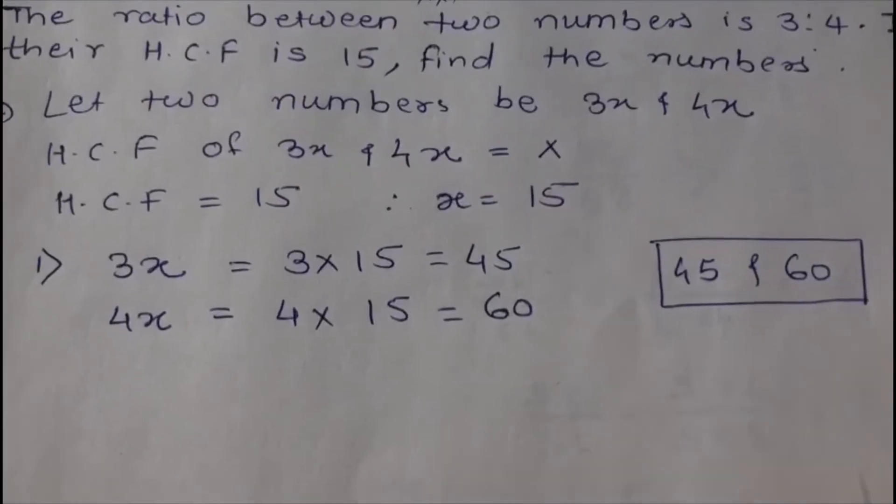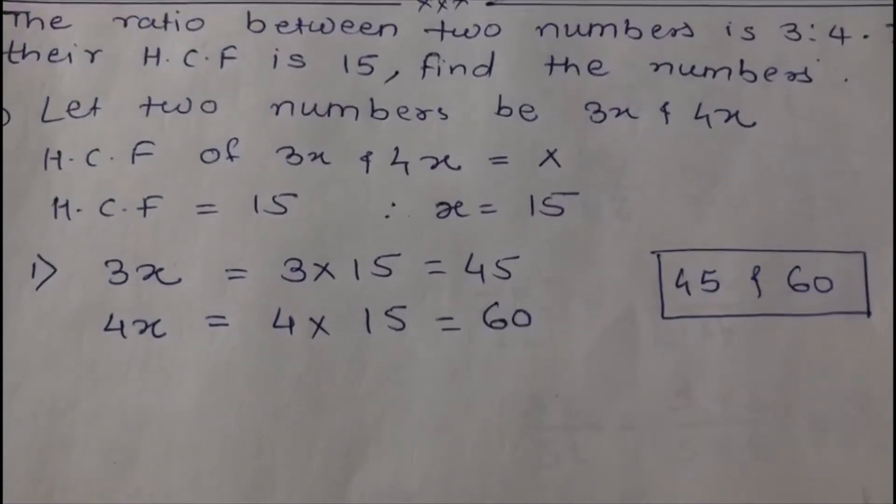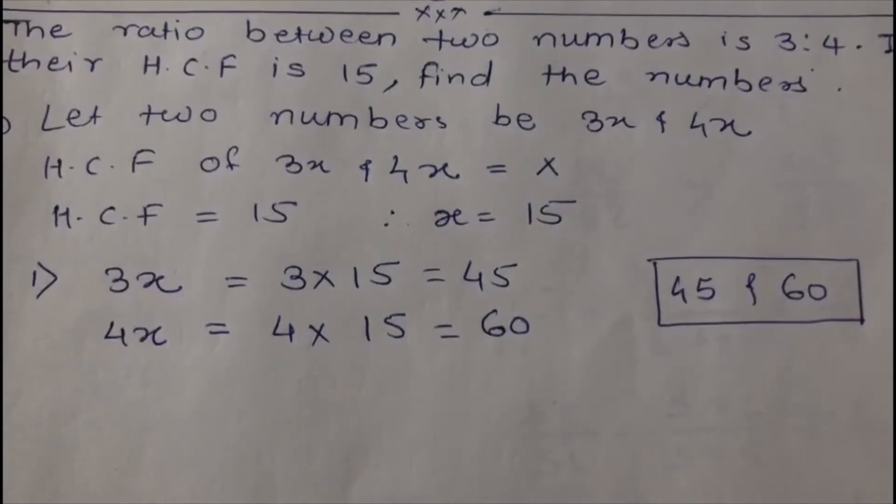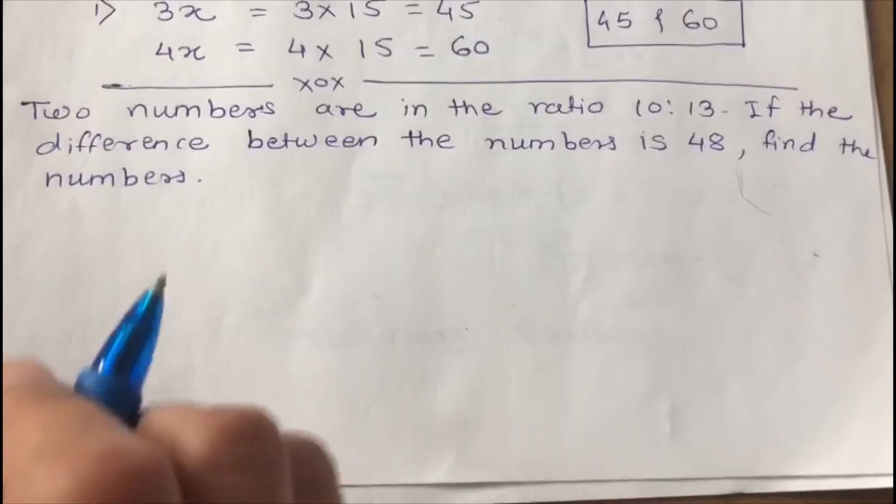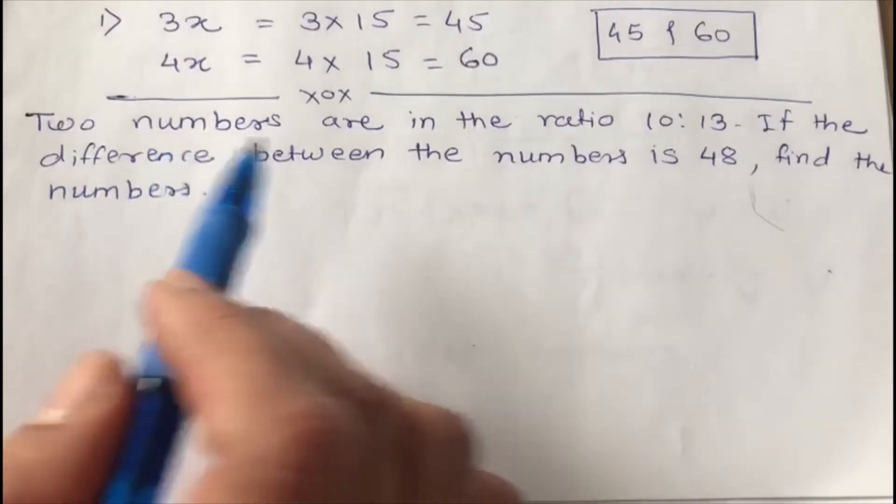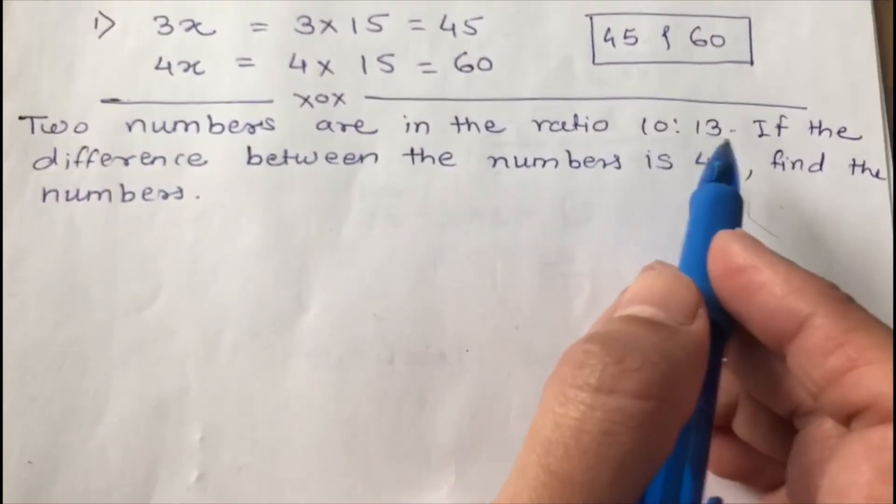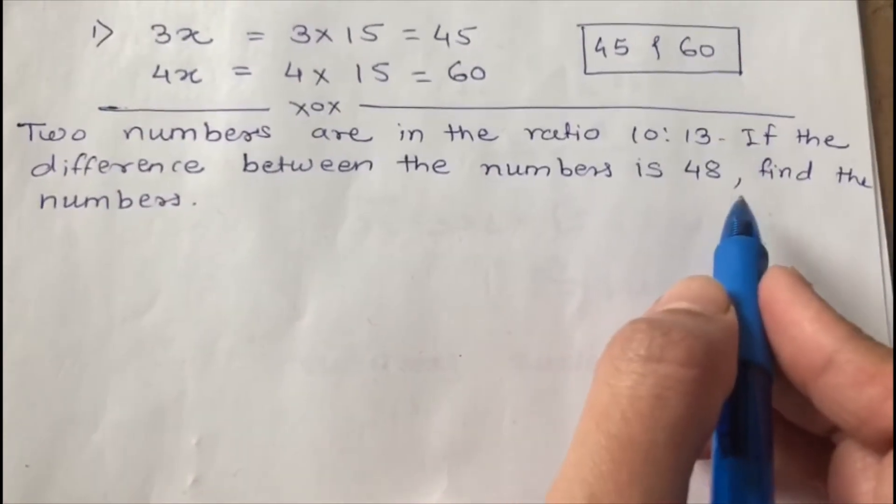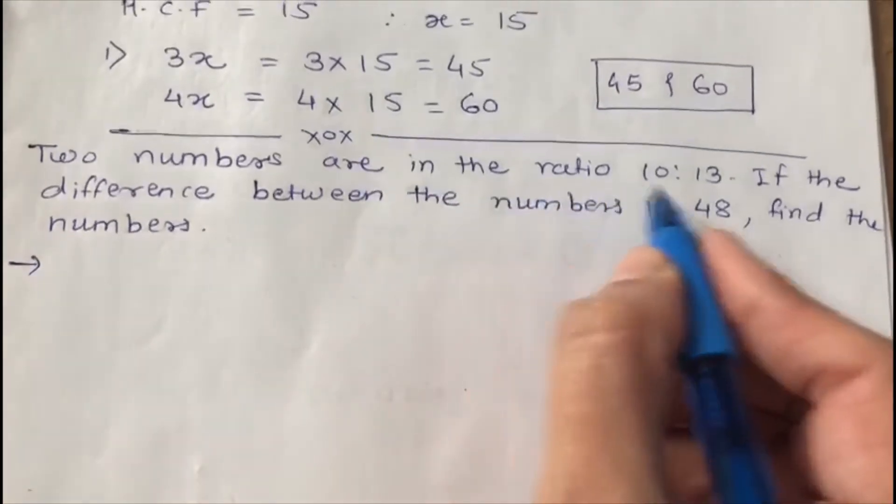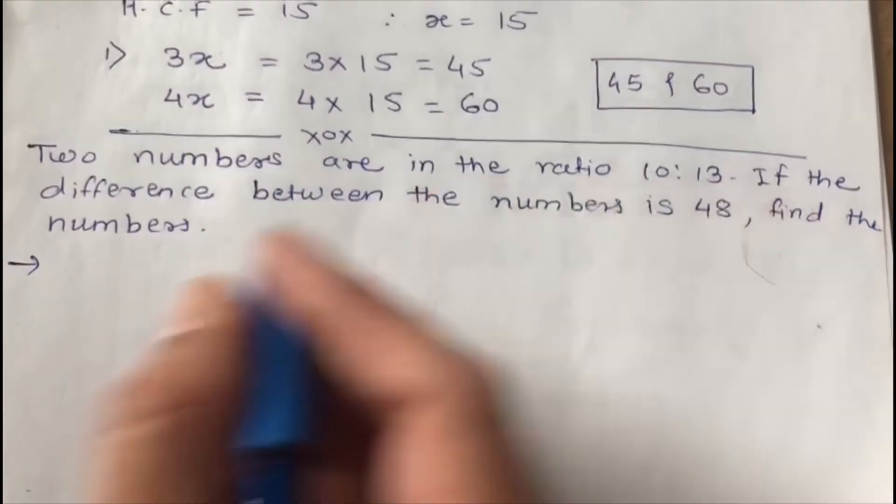It's very easy to find the numbers if LCM is given or HCF is given. So we'll see the next example which is little bit different. Let's read our next example. Two numbers are in the ratio 10 is to 13. If the difference between the numbers is 48, find the numbers. So the ratio is given as 10 is to 13.